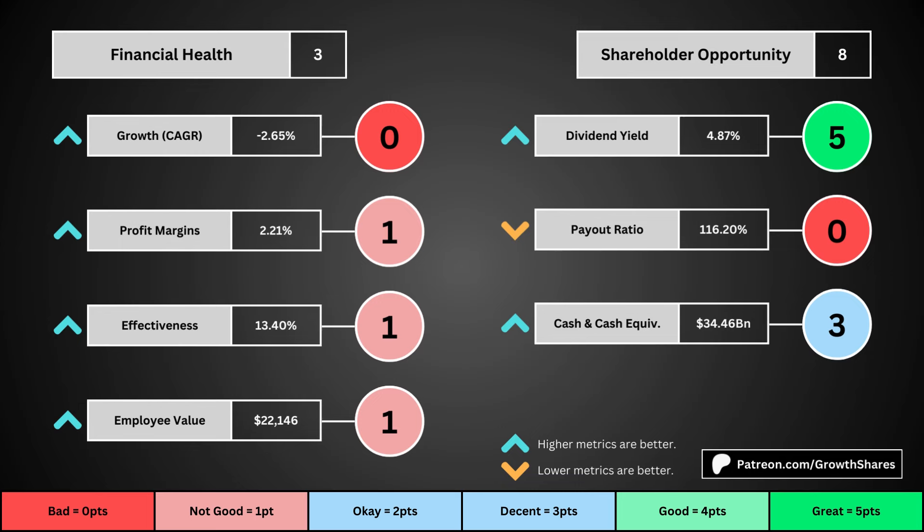The next set of metrics looks at the investment opportunity afforded to shareholders. Here we get the dividend yield, its payout ratio which is how much of the company's earnings are going out to pay shareholders, and the cash and cash equivalents the company has in order to pay dividends, reinvest, and pay off the debts it has on its books. You can see the values for each metric as well as the points given for each.